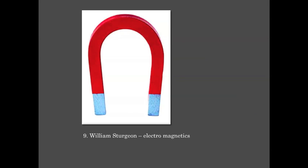None of this could have been done without William Sturgeon's discovery of electromagnetics. His invention involved copper wires wound around an iron bar, creating a magnet that increased the force of the electricity. Previously, electricity could only be transmitted about 200 yards. Joseph Henry and Michael Faraday also contributed much work in the area of electromagnetics. Henry, as mentioned earlier, achieved this by insulating the copper wires.